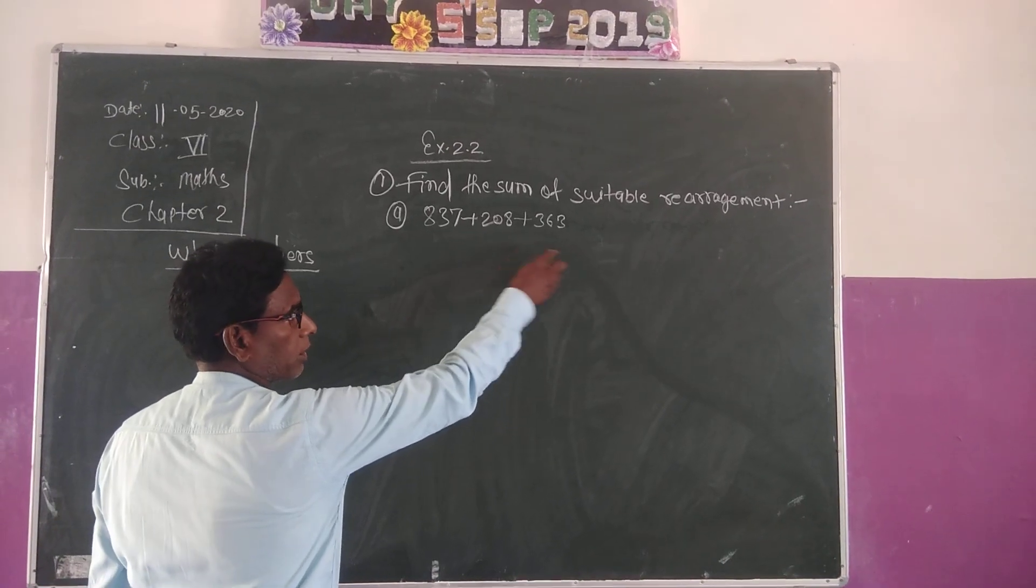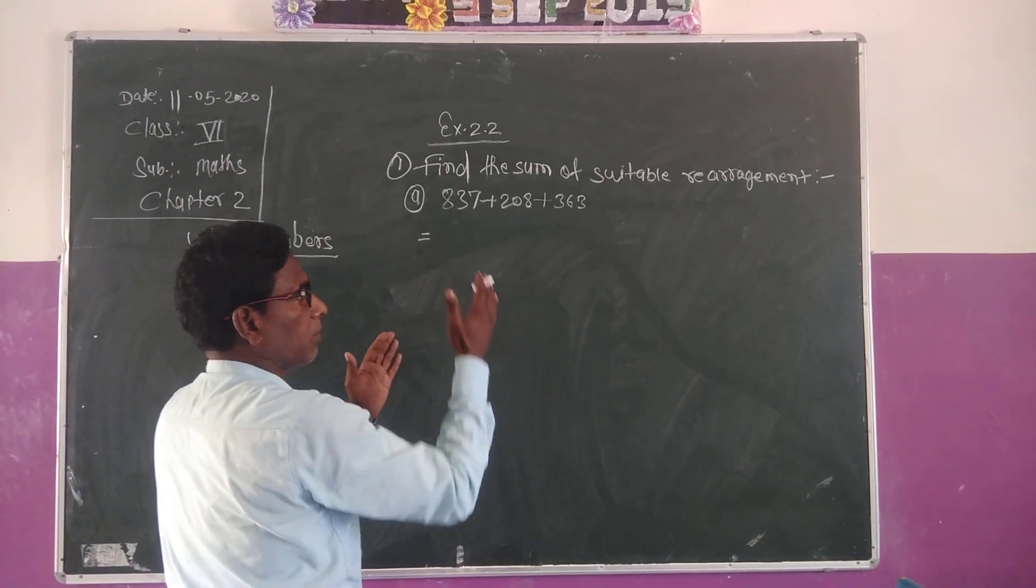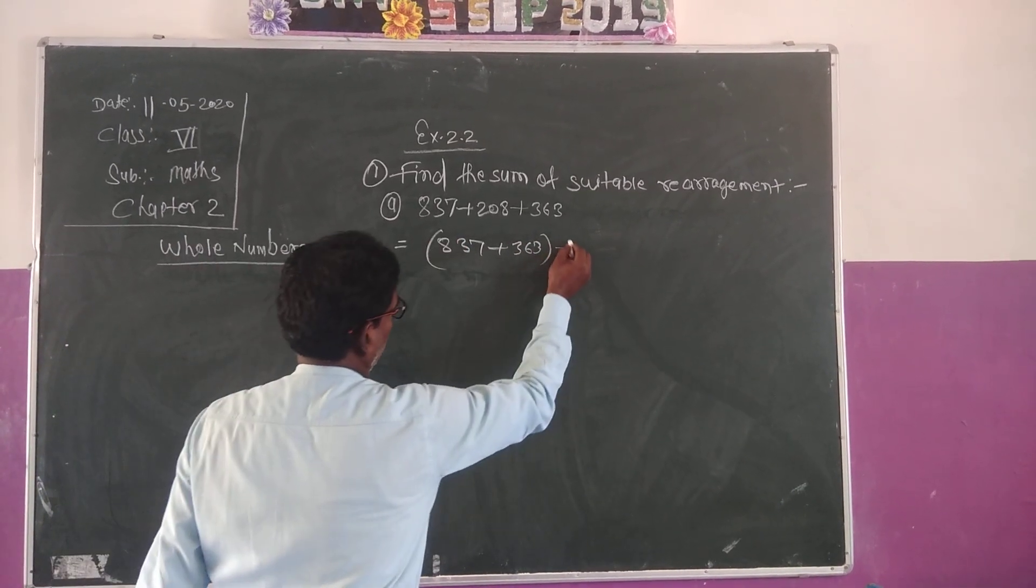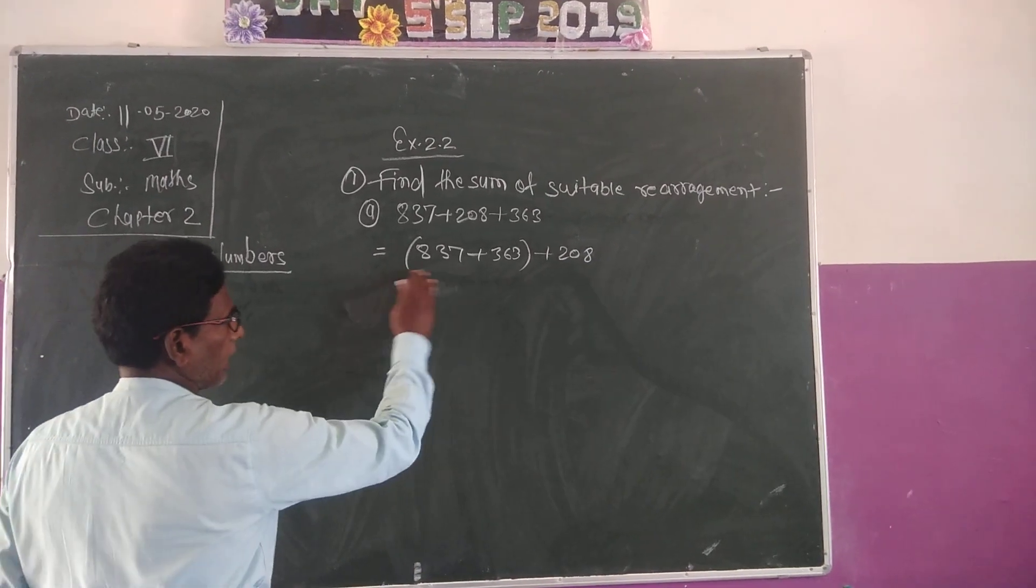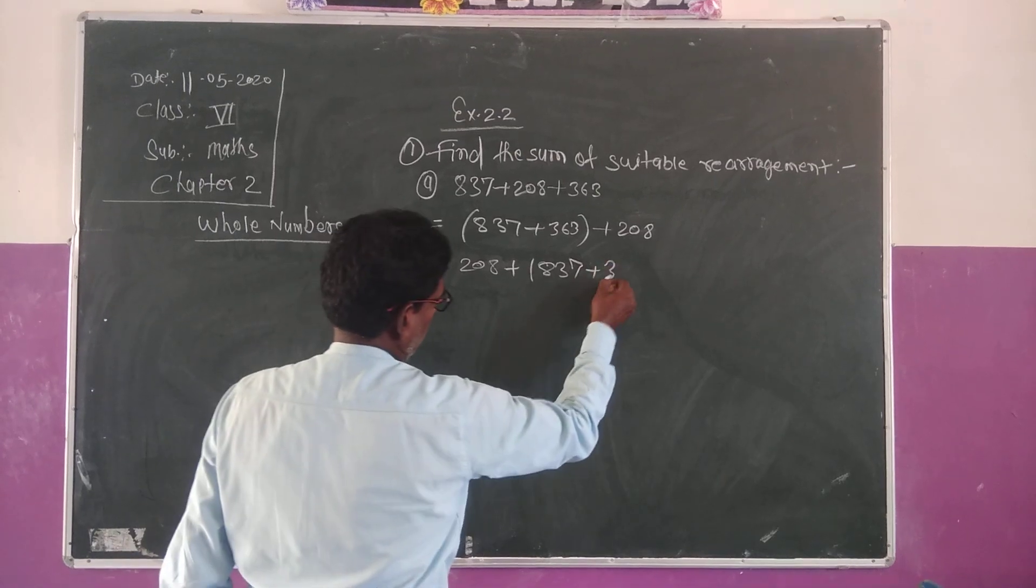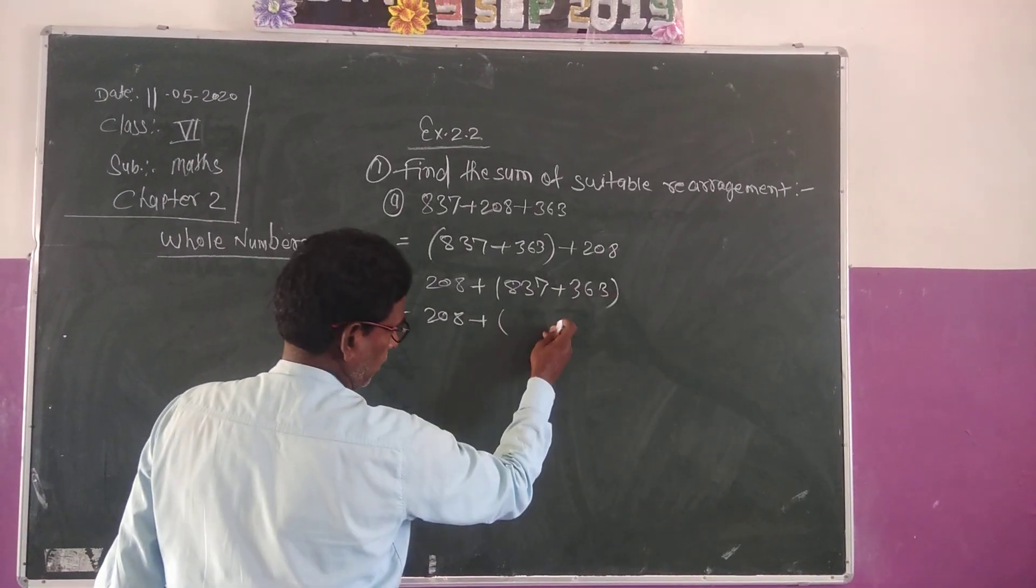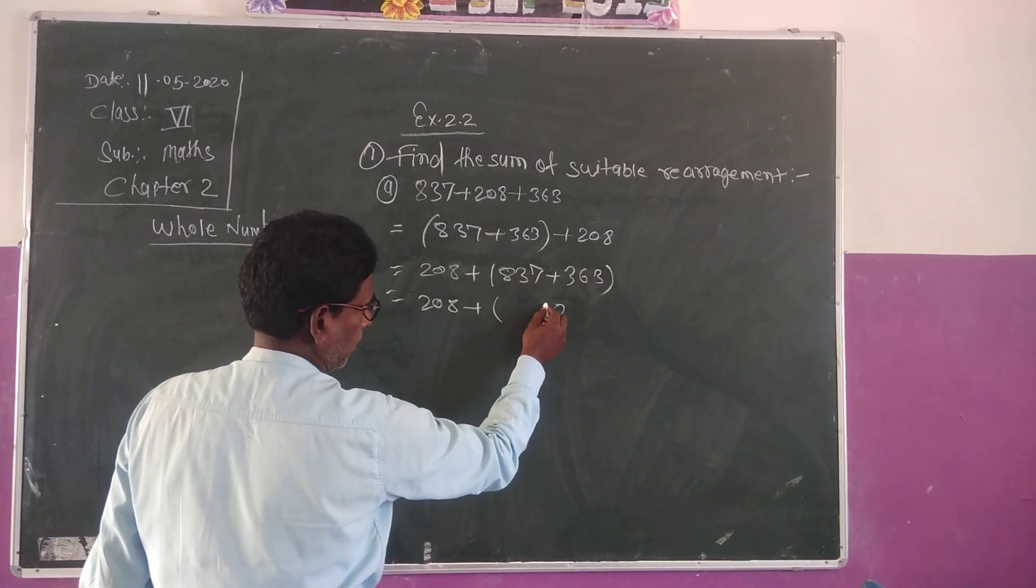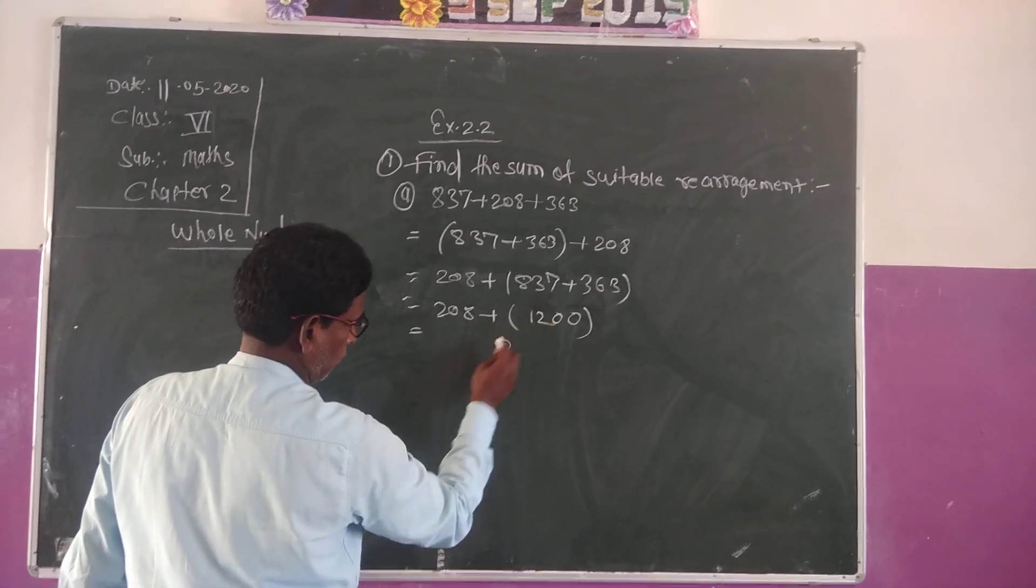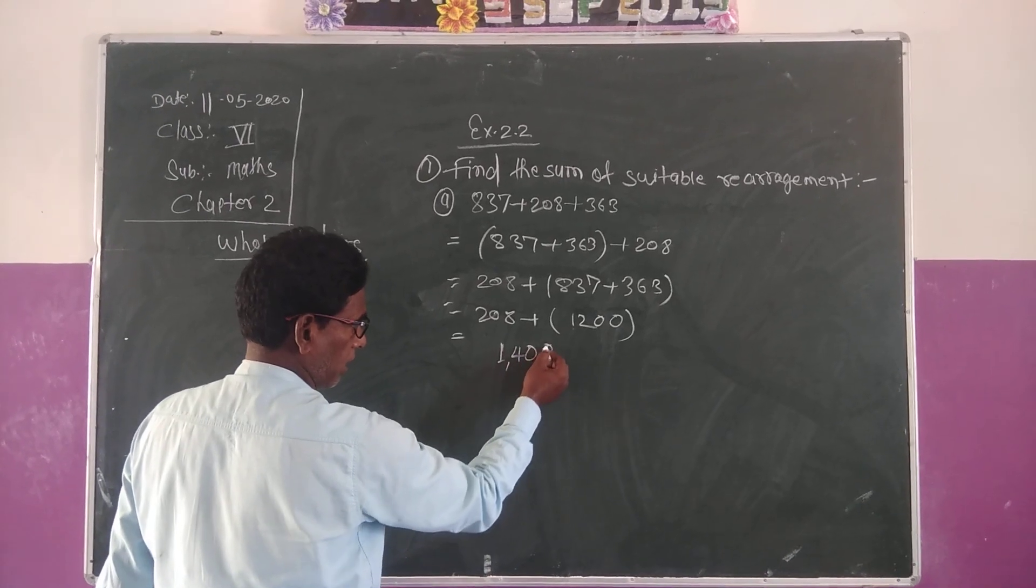Question A: 837 plus 208 plus 363. How do you solve it? First, you add these given numbers in a suitable way. We can write it in another form: 208 plus 837 plus 363. We add both: 7 plus 3 is 10, carry 1; 3 plus 6 plus 9 is 18, carry 1; 8 plus 3 plus 1 is 12. Now we add both: 8, 0, then 200 plus 12 plus 0 is 212. Result is 1408.